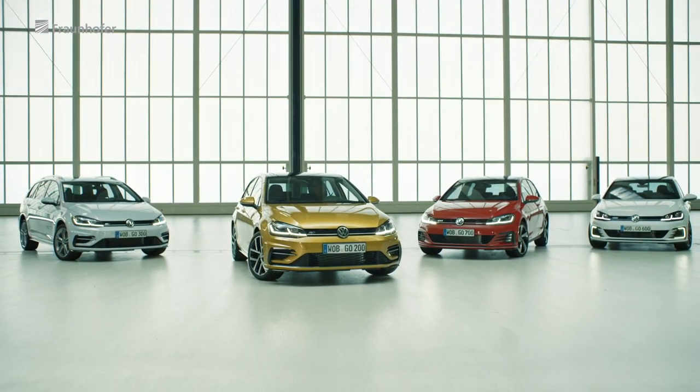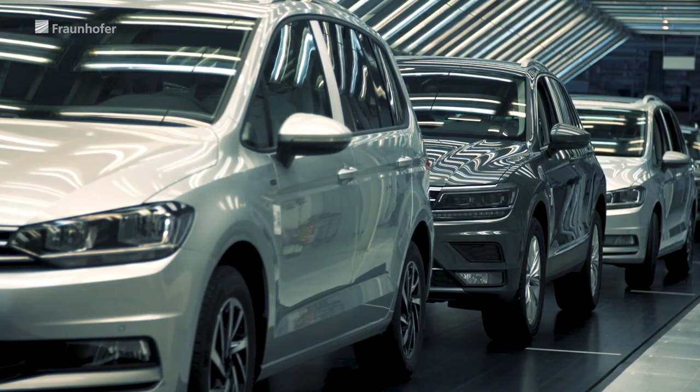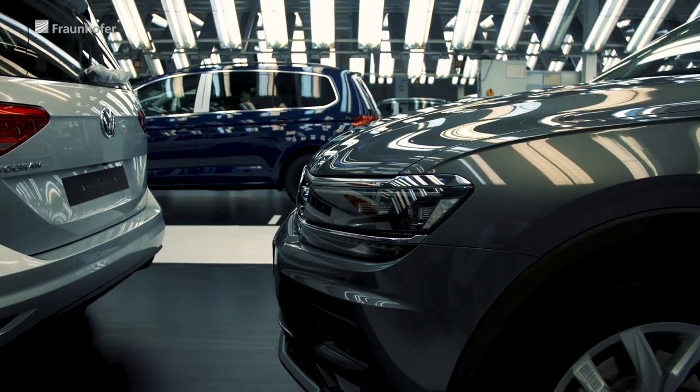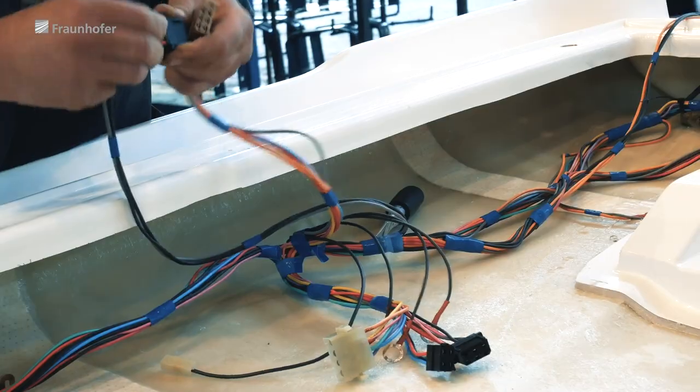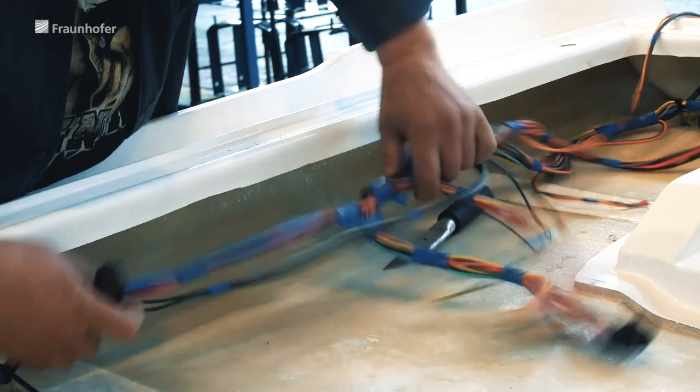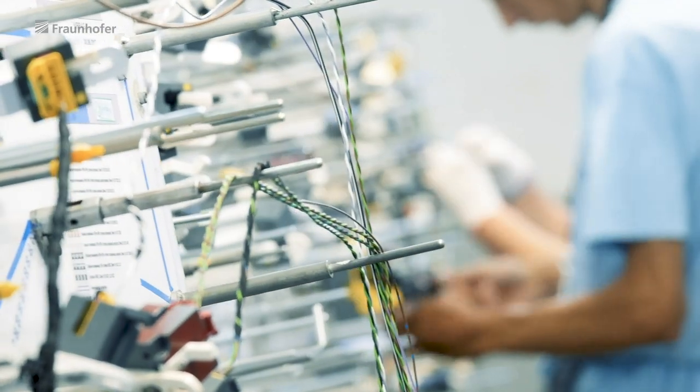At VW's Wolfsburg plant, for example, only two identical vehicles come off the production line each year. Each vehicle contains up to eight kilometers of copper cable. This corresponds to a weight of about 160 kilograms.